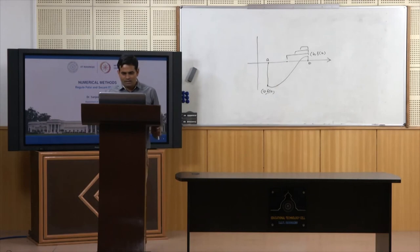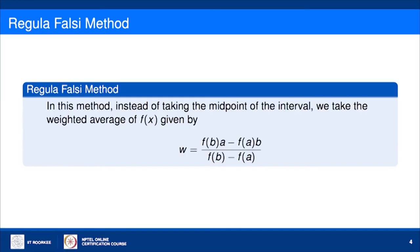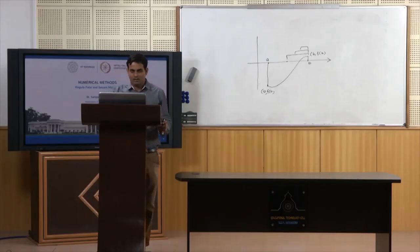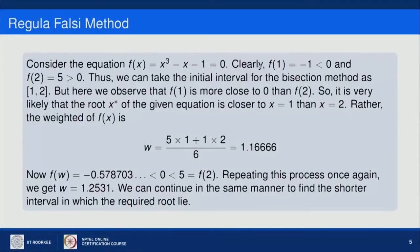In the Regula Falsi method, instead of taking the midpoint of the interval we take the weighted average w, given by: w = (f(b)·a − f(a)·b) / (f(b) − f(a)). Consider the equation f(x) = x³ − x − 1 = 0. Checking: f(1) = −1 (negative) and f(2) is positive, so a root lies between 1 and 2. Thus we take the initial interval as [1, 2].